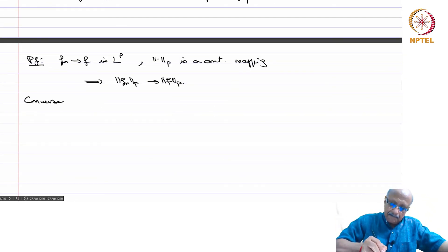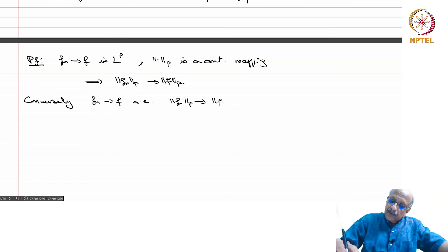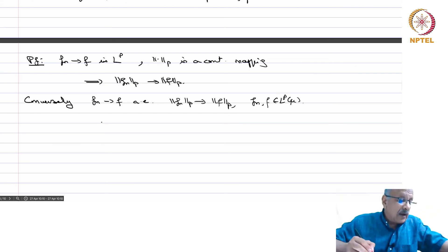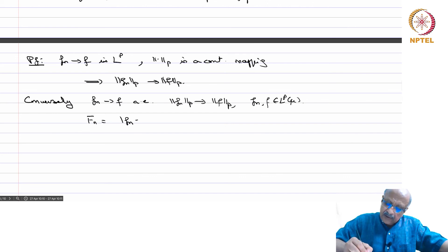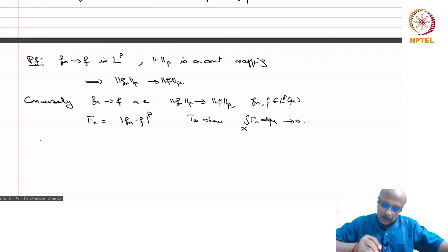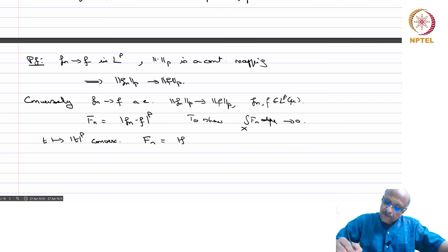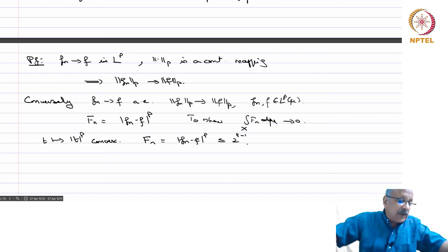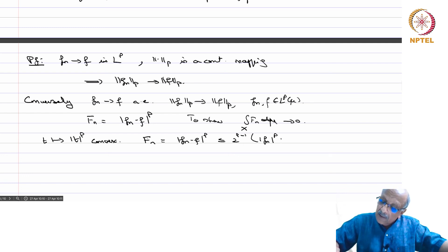Conversely, suppose f_n → f almost everywhere and norm(f_n)_p → norm(f)_p; we want to show f_n → f in LP. Take F_n = |f_n - f|^p. We want to show integral of F_n dmu over X goes to 0. Since t ↦ |t|^p is convex, we have F_n = |f_n - f|^p ≤ 2^{p-1}(|f_n|^p + |f|^p). Call this g_n.